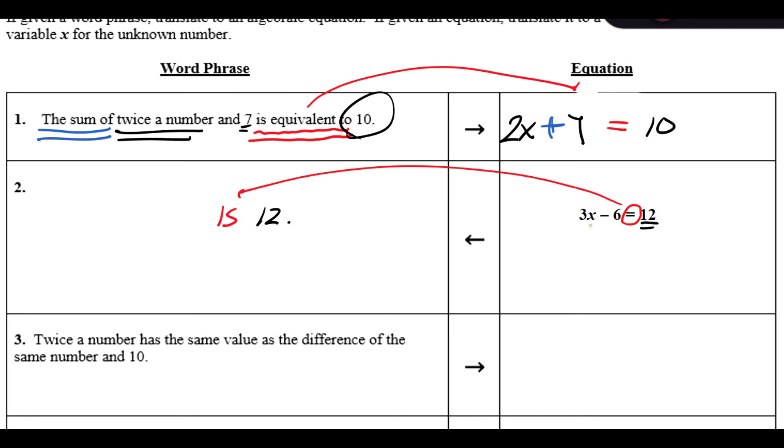The left expression I need to rewrite in English. So maybe because it's 3x minus 6, we can say this is the difference of 3x. We could say the difference of 3 times x, or we could say triple a number, and 6. So the difference of triple a number and 6 is 12. So putting this all together, I'll just move this is 12 down here.